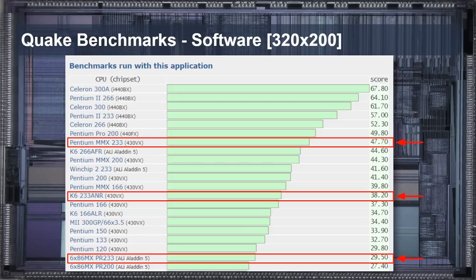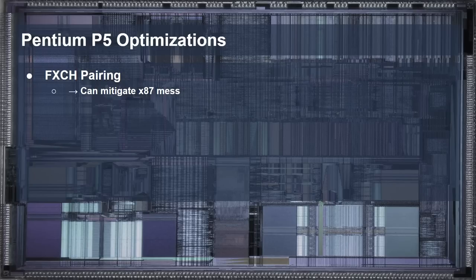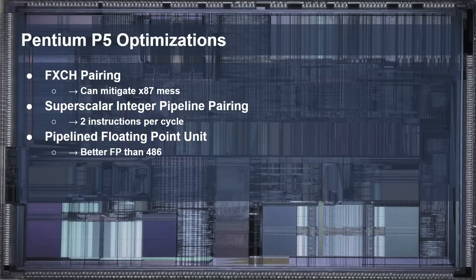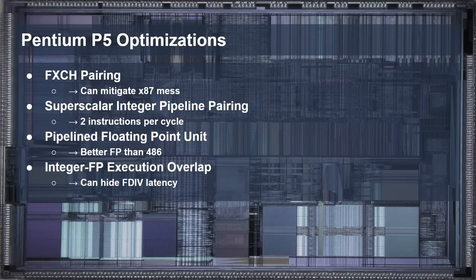While any answer must be architectural — specifically how the code was executing on the specific architecture — there is a question of narrowing down the source of the difference. We should begin by looking at the four main optimizations used by Quake when targeting the Pentium. The first was the heavy usage of the floating-point exchange instruction, required to mitigate a performance issue caused by the x87 floating-point extensions. The second was superscalar execution, allowing up to two integer instructions in parallel. The third was the pipelined floating-point unit of the Pentium. And finally, there was the exploitation of an optimization allowing floating-point division operations to overlap partially with integer instruction execution.